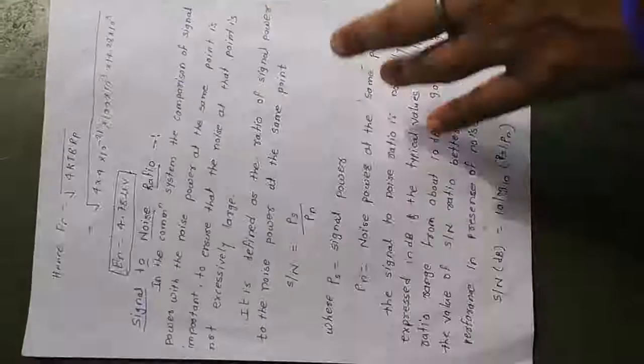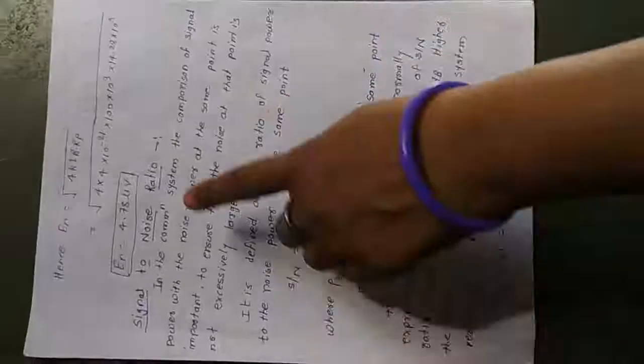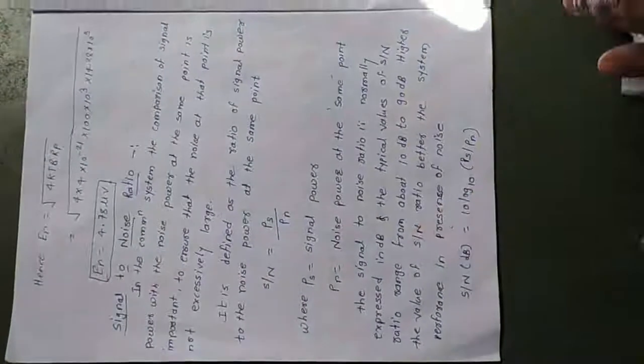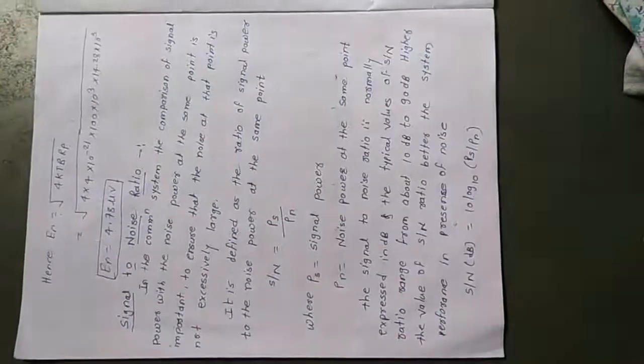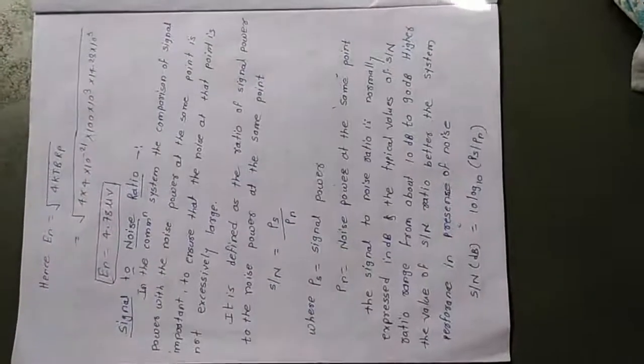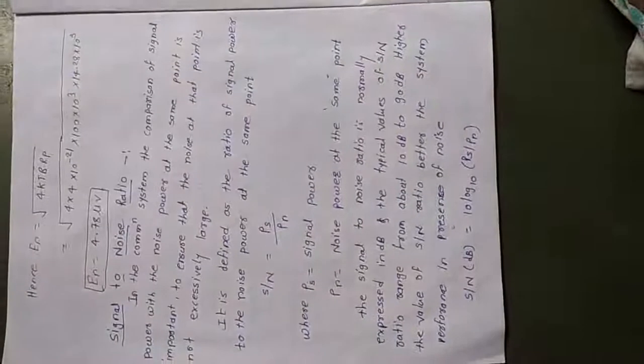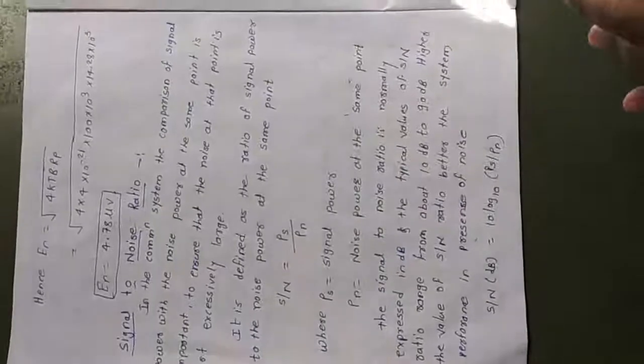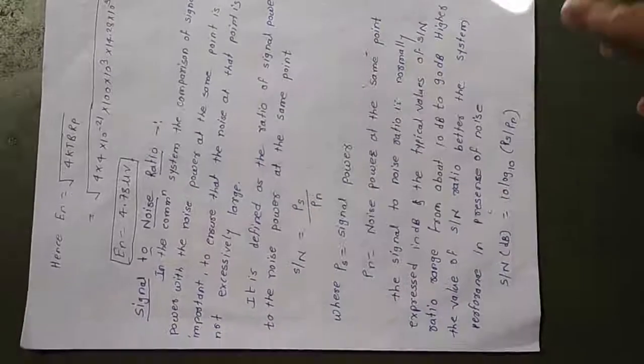The signal-to-noise (S/N) ratio is what we are going to study today. In a communication system, the comparison of signal power with noise power at the same point is important to ensure that noise is not excessively large. It is defined as the ratio of signal power to noise power at the same point.